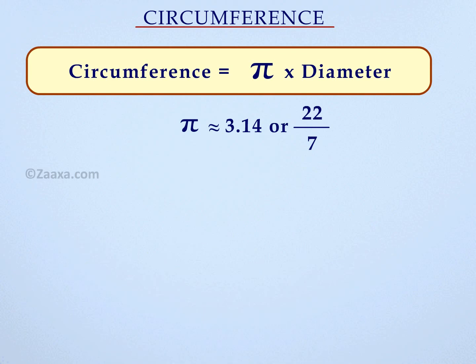So remember, the formula to find the circumference of a circle is pi times diameter.